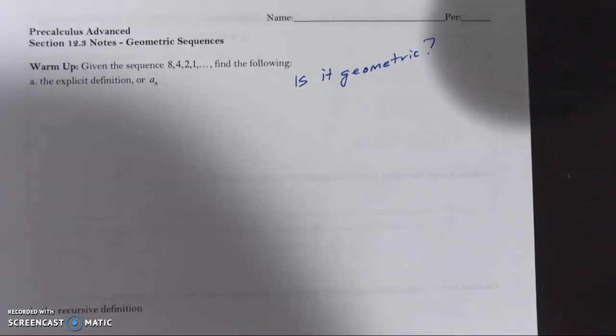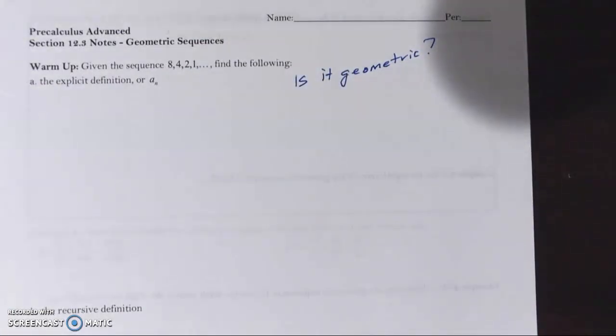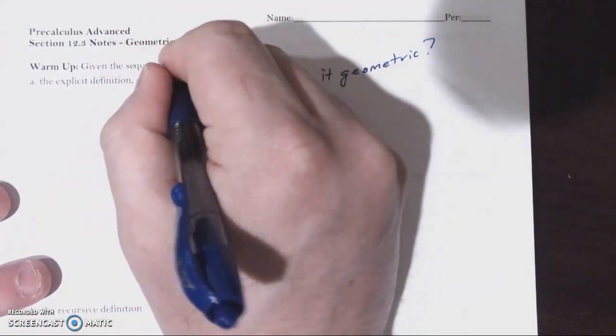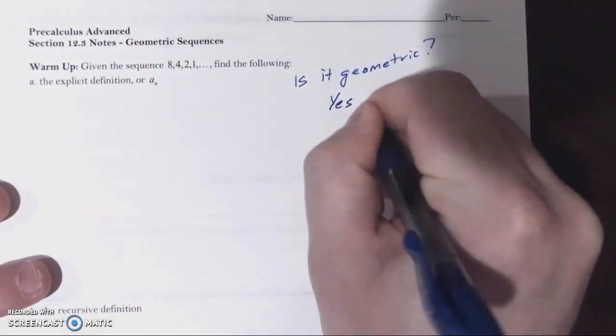I think the first thing you guys should be thinking of when you're looking at a sequence once we wrap up this chapter is, is the sequence arithmetic, is it geometric, or is it neither of those two? So then we revert back to that first section where we're trying to find the pattern. This is geometric. So yes.